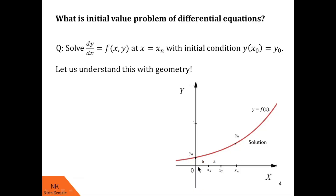To do so, we first divide this interval into several steps of equivalent length. We call this length h. Then we find the value of the curve at x1, then at x2, and so on, until finally we calculate the value of y = f(x) at x = xn. So after several iterations we reach xn and calculate the value of the solution curve there.